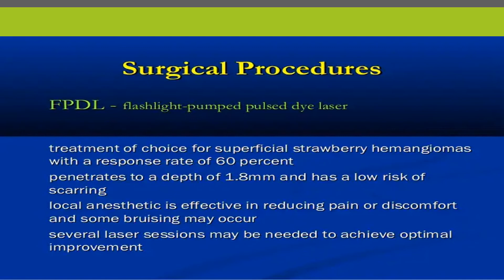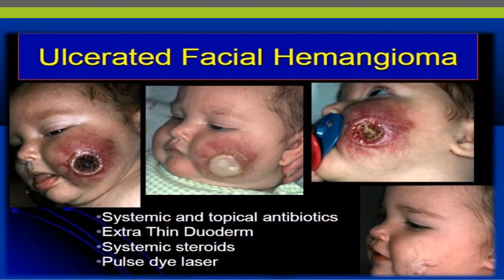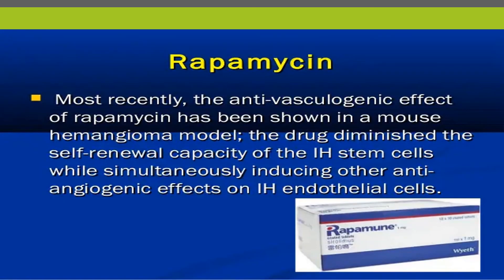The pulsed-dye laser is the treatment of choice for superficial strawberry hemangiomas with a response rate of 60 percent. It penetrates to a depth of 1.8 millimeters and has a low risk of scarring. For ulcerative facial hemangiomas, systemic antibiotics, extrathin DuoDerm dressing, systemic steroids, and pulsed-dye laser are needed.